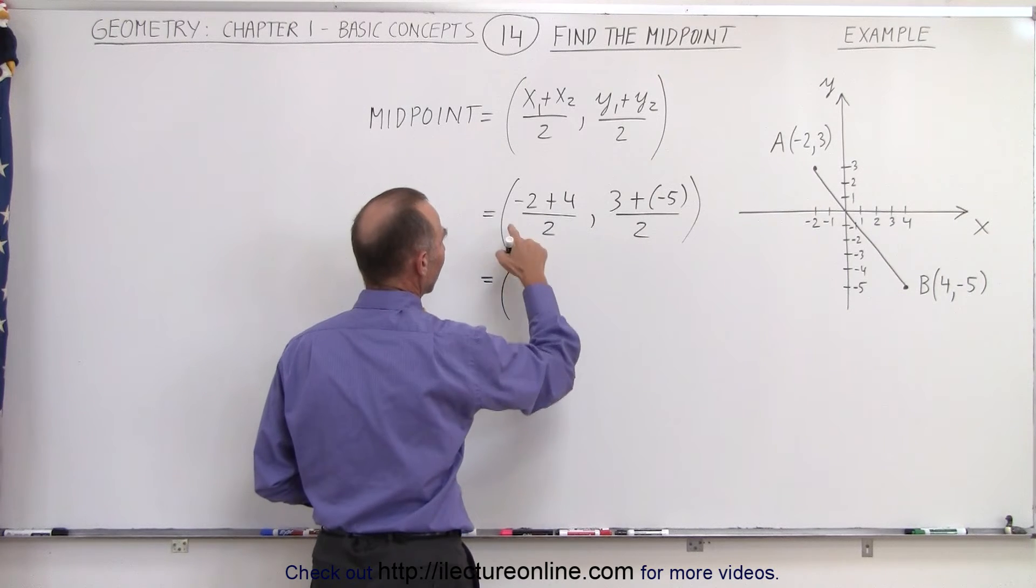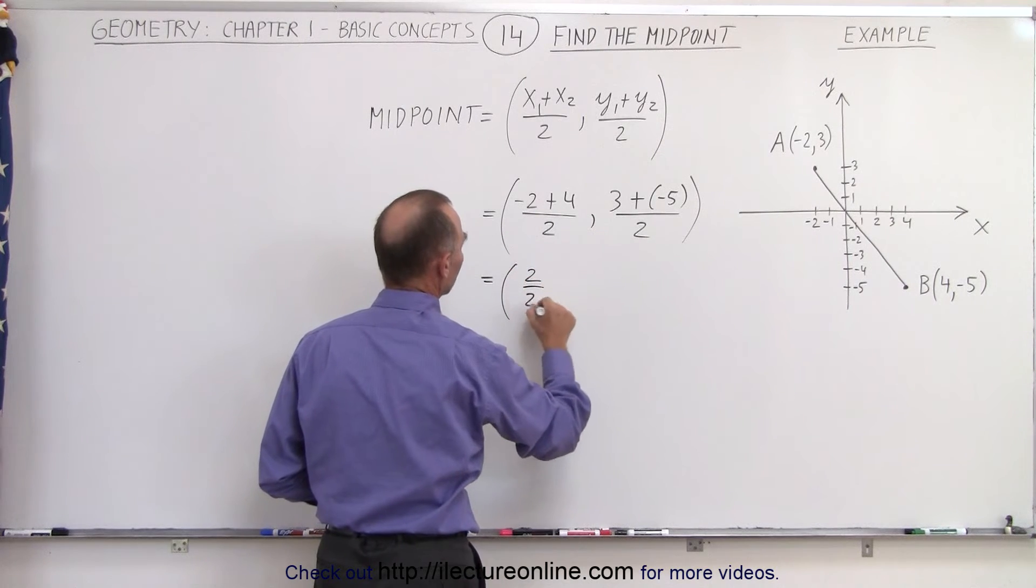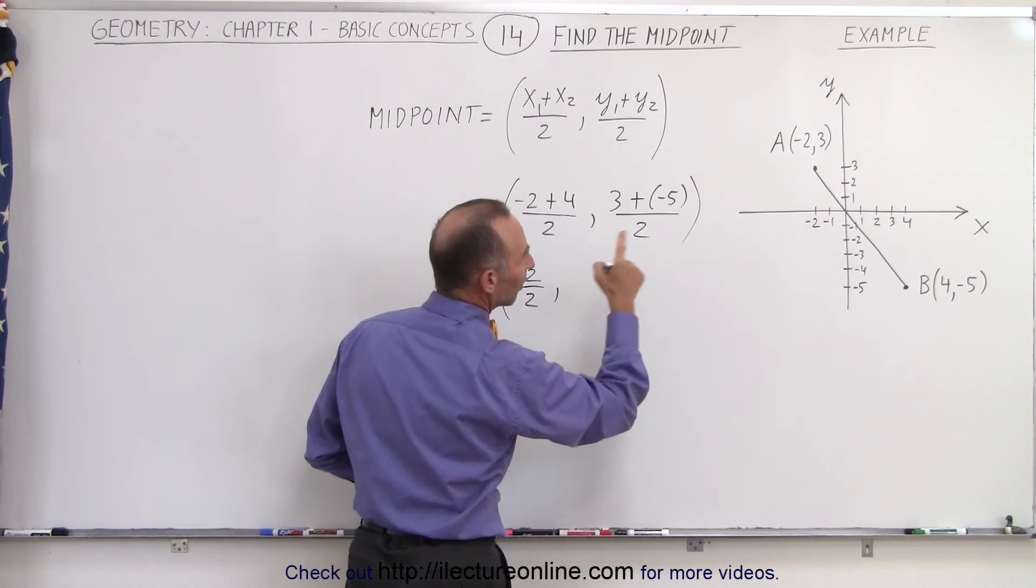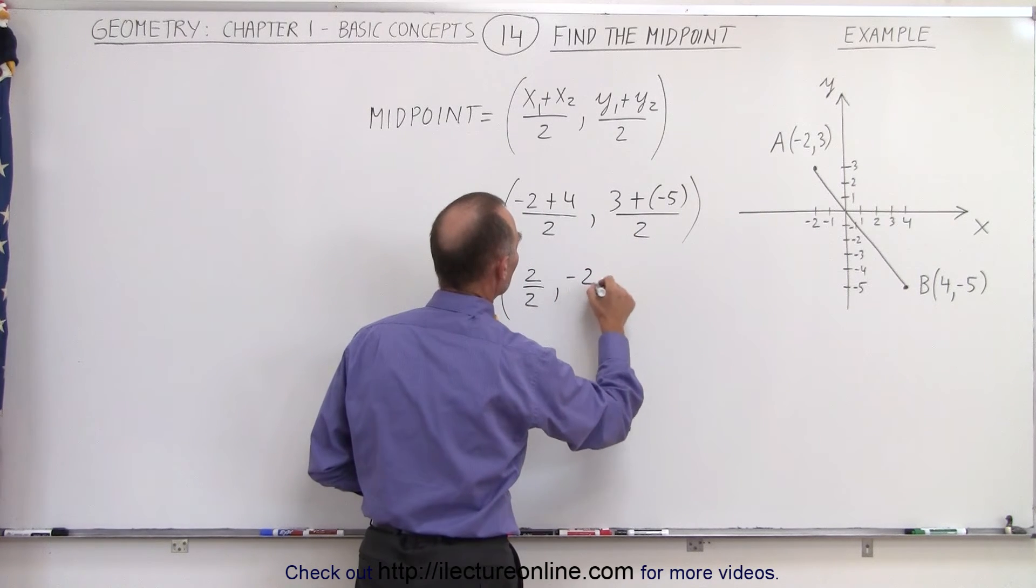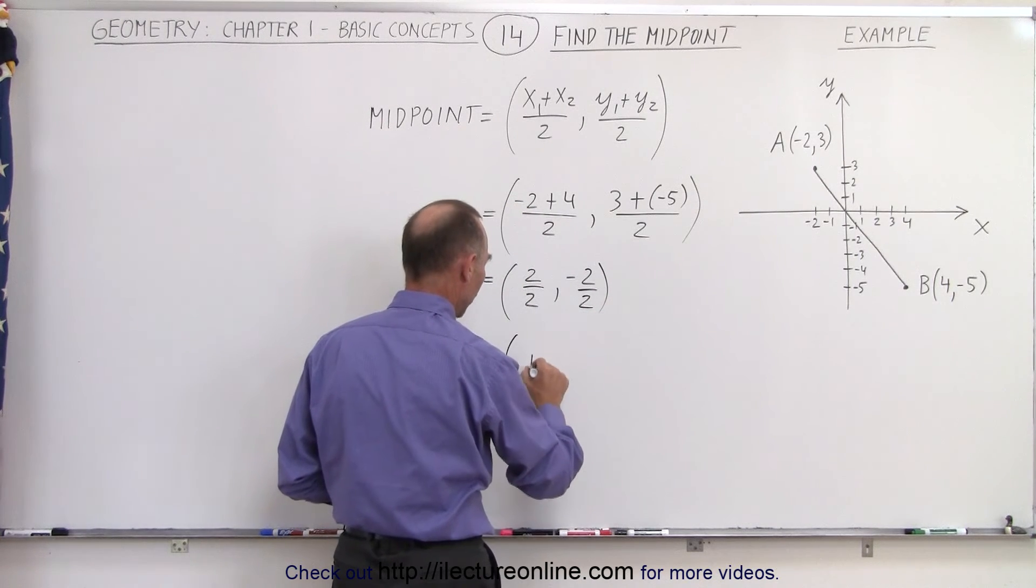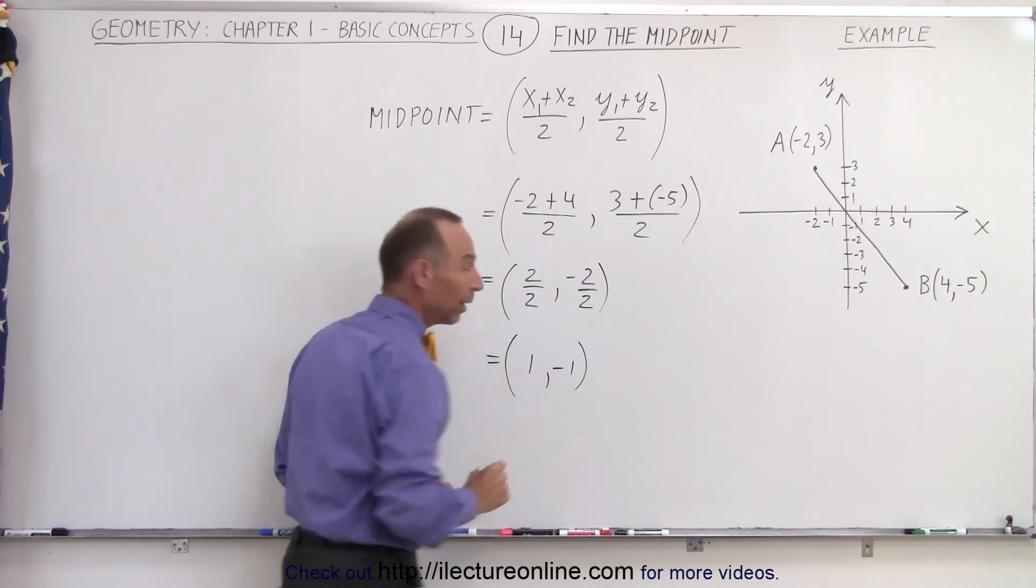So this is going to be equal to minus 2 plus 4, that's 2 divided by 2, and that's 1. Then 3 plus a negative 5, that will be negative 2 divided by 2. And that means that the coordinates of the midpoint are 1 and negative 1.